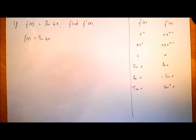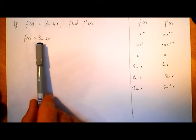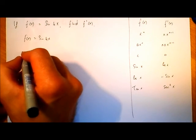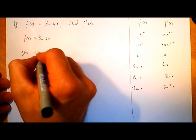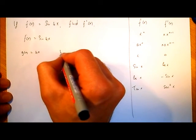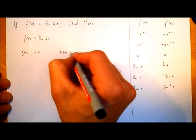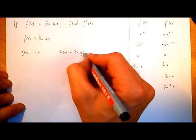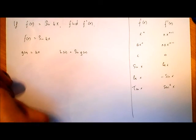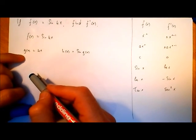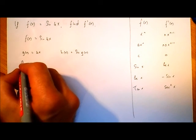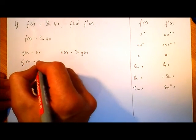So we're going to have to use the chain rule. We have two functions. The first function is the sine function, and the second function is 4x. So we write it down like this. We write g(x) is 4x, and then h(x) is equal to sin(g(x)). So now I can differentiate g(x), differentiate 4x, and I just get 4. So g'(x) is equal to 4.